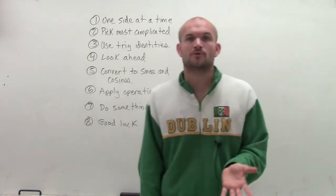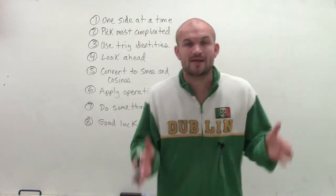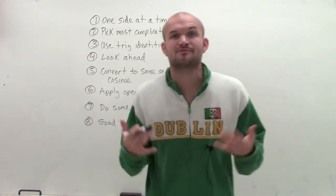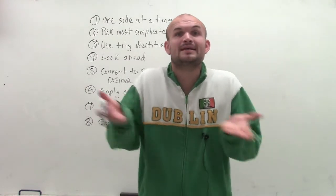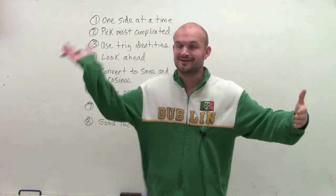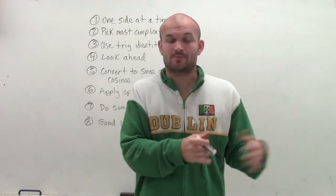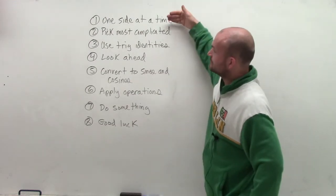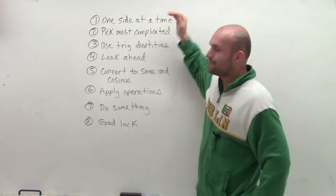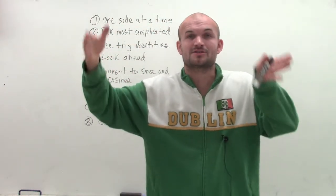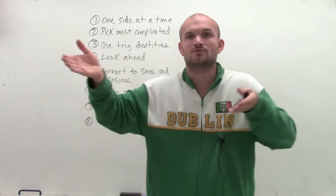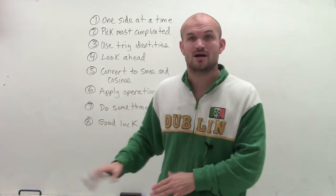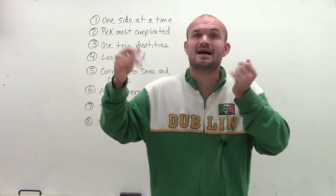So there are a couple of steps I want to go through to prepare you for verifying trigonometric identities. Rather than having expressions, we're now going to have an equation where a trigonometric expression equals another trigonometric expression, and we want to verify they're equal. We've had a lot of practice with simplifying, so the first thing is: pick one side and just work on that one side. Don't try to work on both sides at the same time.